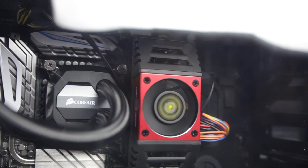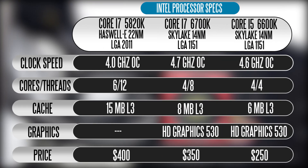Here you can see a breakdown of the specifications and features of each of these three processors. The Skylake processors are both quad-core. The only main difference is the frequency and the fact that the Core i7s have hyper-threading enabled, so they have eight threads, versus the 6600K which has no hyper-threading, just like all other Core i5s. The 5820K has been around for almost a year and is one of the most economical six-core CPUs from Intel, based on the Haswell-E platform using Socket 2011 at 22 nanometers, versus the Skylake processors which are based on a smaller 14 nanometer architecture. All three of these CPUs are designed for overclocking.